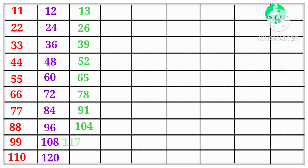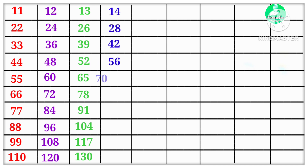13 9s are 117, 13 10s are 130. 14 1s are 14, 14 2s are 28, 14 3s are 42, 14 4s are 56, 14 5s are 70, 14 6s are 84, 14 7s are 98, 14 8s are 112, 14 9s are 126.